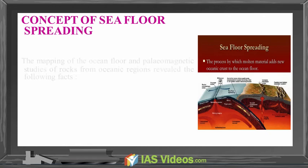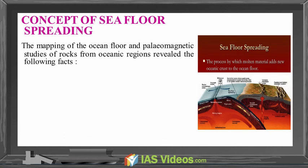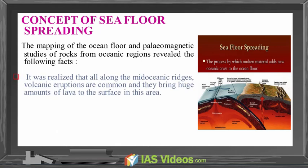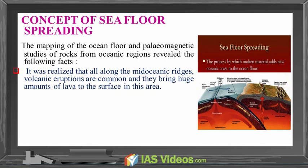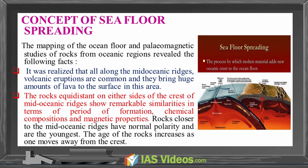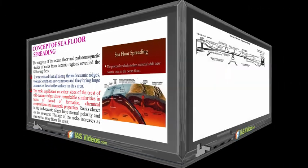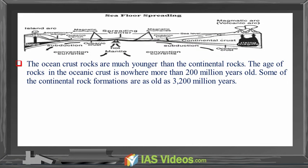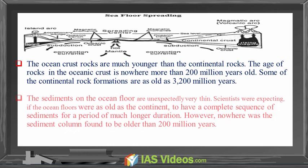The concept of seafloor spreading, the mapping of the ocean floor, and paleomagnetic studies of rocks from oceanic regions reveal the following facts. All along the mid-oceanic ridges, volcanic eruptions are common and bring huge amounts of lava to the surface. Rocks equidistant on either side of the crest of mid-oceanic ridges show remarkable similarities in terms of periods of formation, chemical composition, and magnetic properties. Rocks closer to the mid-oceanic ridges have normal polarity and are the youngest, and the age of rocks increases as one moves away from the crest. The ocean crust rocks are much younger than the continental rocks, and the age of rocks in the oceanic crust is nowhere more than 200 million years old.